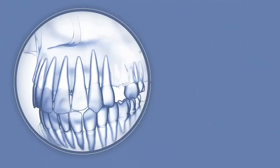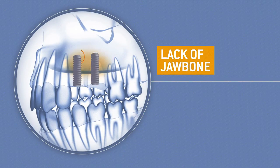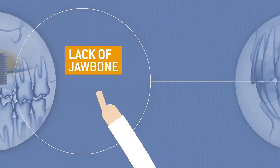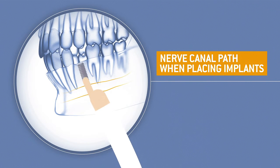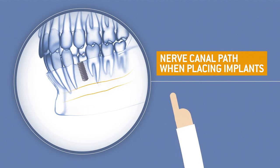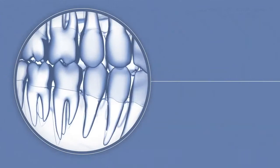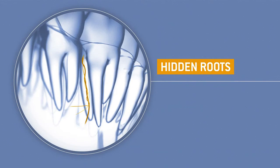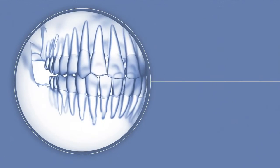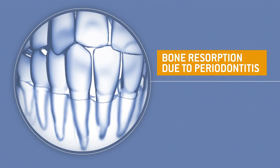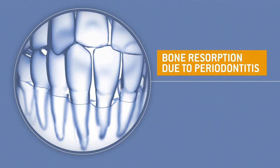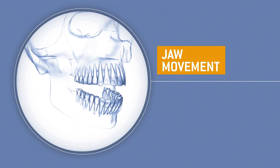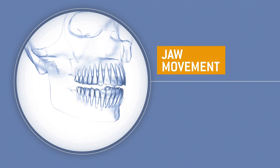Whether you suffer from a lack of jaw bone, or an unusual nerve canal path for placing implants, hidden roots during a root canal treatment, or bone resorption due to severe periodontitis, your dentist can immediately detect and diagnose these problems. A 3D X-ray image can also be used to consider jaw movement in order to treat pain in the temporomandibular joint.